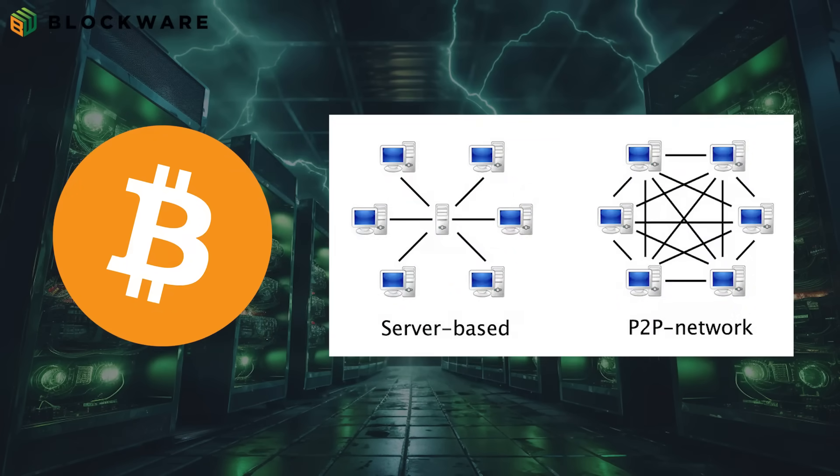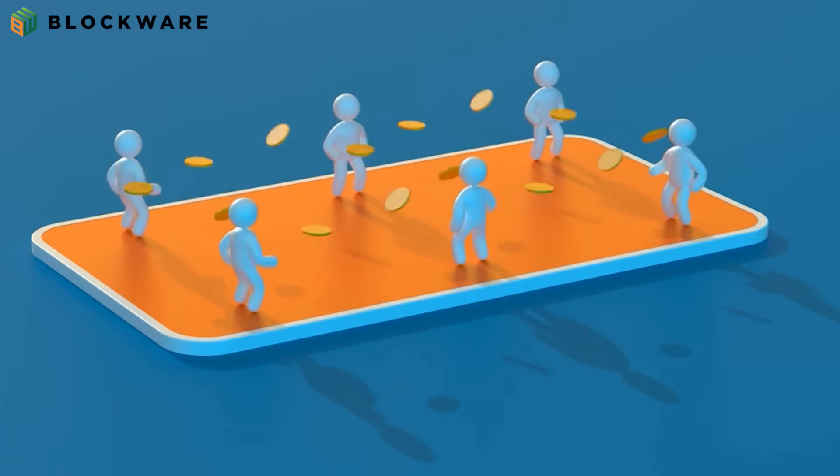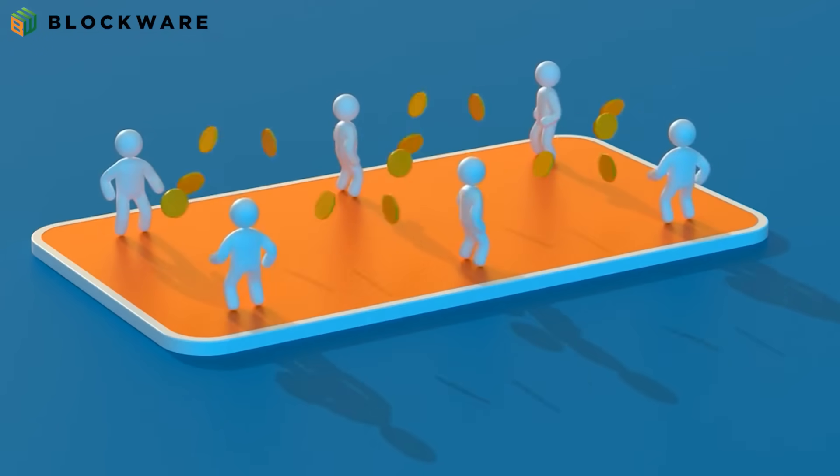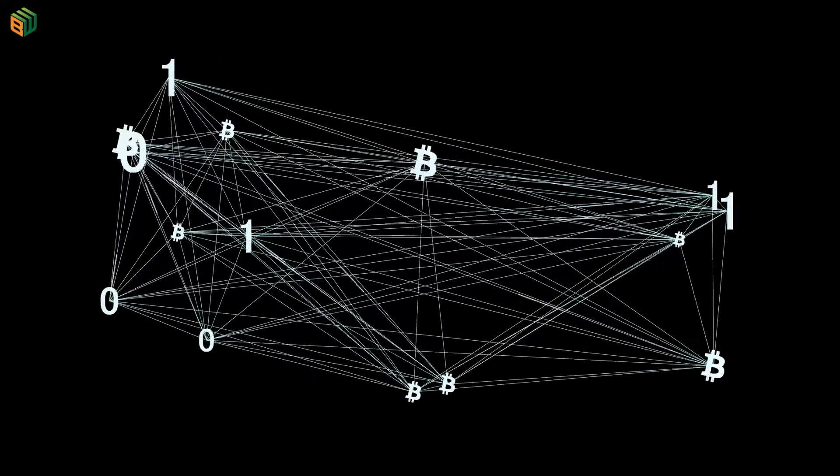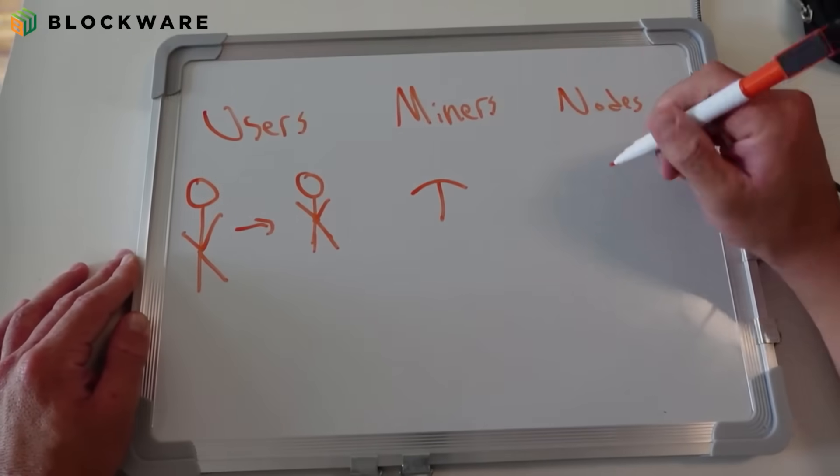Bitcoin is a peer-to-peer electronic cash system that operates without the need for intermediaries like banks or payment processors. It is a decentralized network where consensus is established through cryptography rather than trust and central authorities.